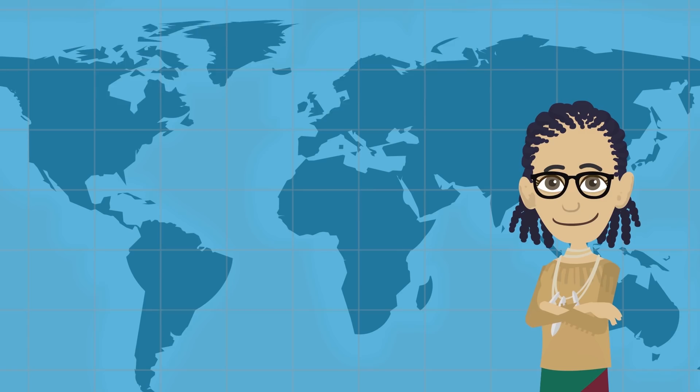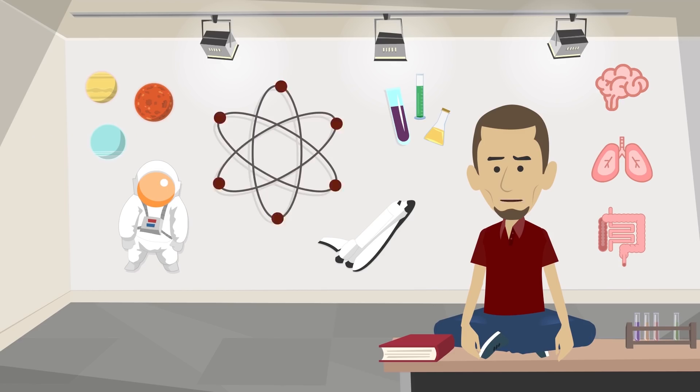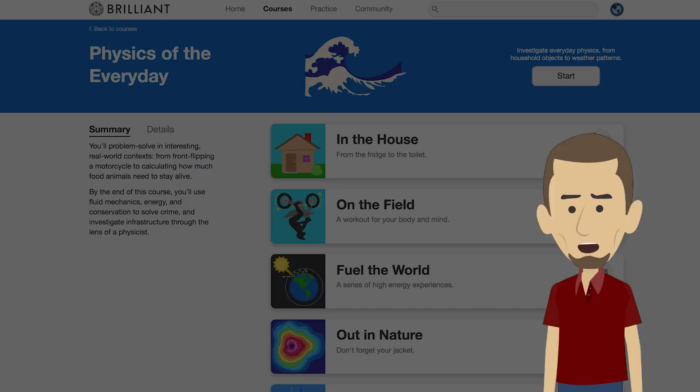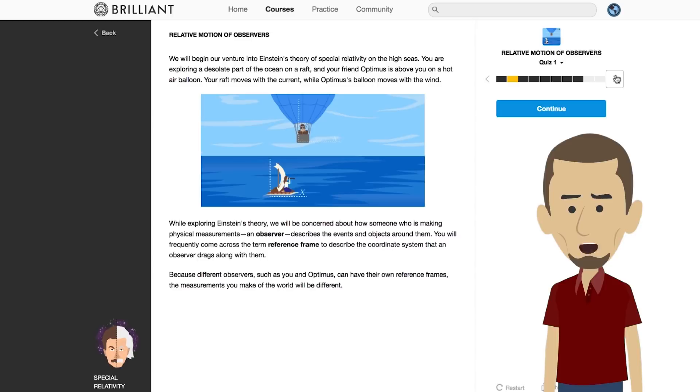When someone starts spouting nonsense about the healing effects of quantum energy or vaguely invokes one of Einstein's theories to push an ideology or sell a product, what better way to counter it than with an actual understanding of the science? For that, I highly recommend that you check out this week's sponsor, Brilliant. Brilliant offers courses in everything from the basic physics of the everyday to Einstein's theory of special relativity, using visual representations of the topics. The best way to learn is by doing, and their visual problem sets are fun and engaging.